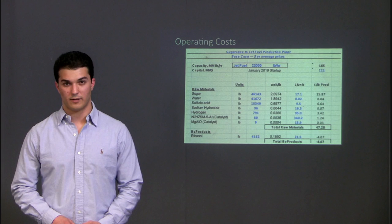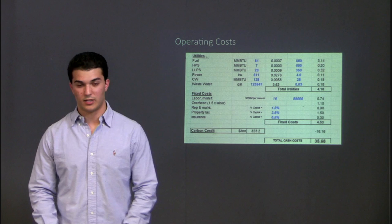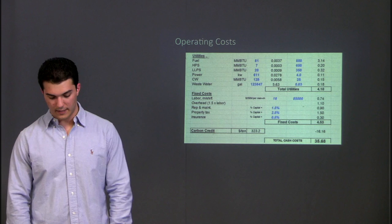Both the utilities and labor costs make up only about 20% of the total cash costs before a carbon credit was introduced, which also shows how dependent this design is on raw materials for profitability. Speaking of the necessary carbon credit, we found that this project will never have a positive net present worth without the intervention of government subsidies in the form of carbon credits.